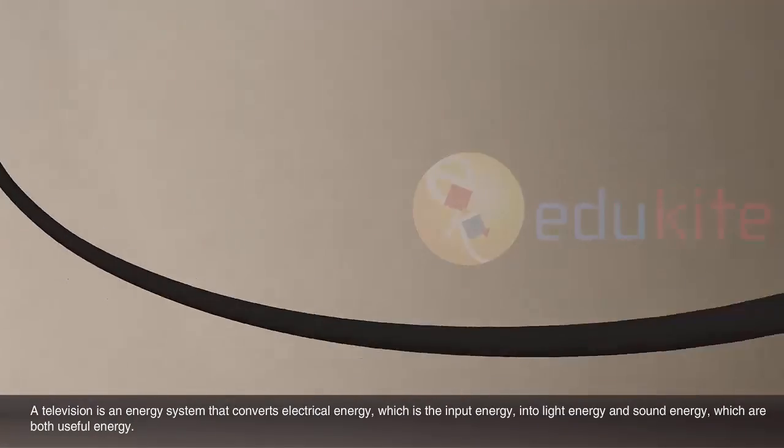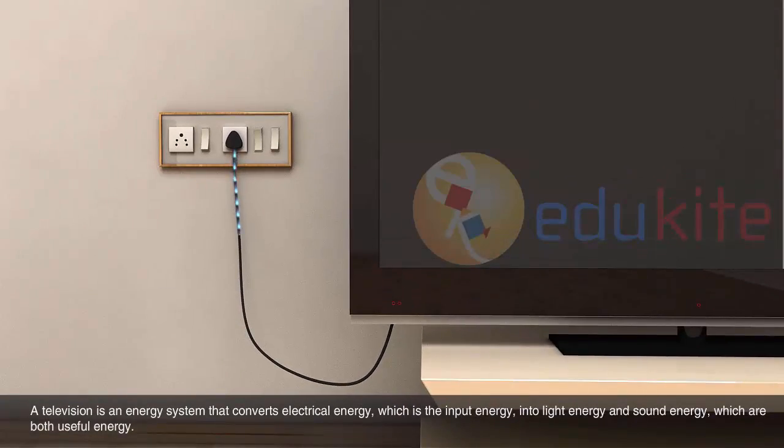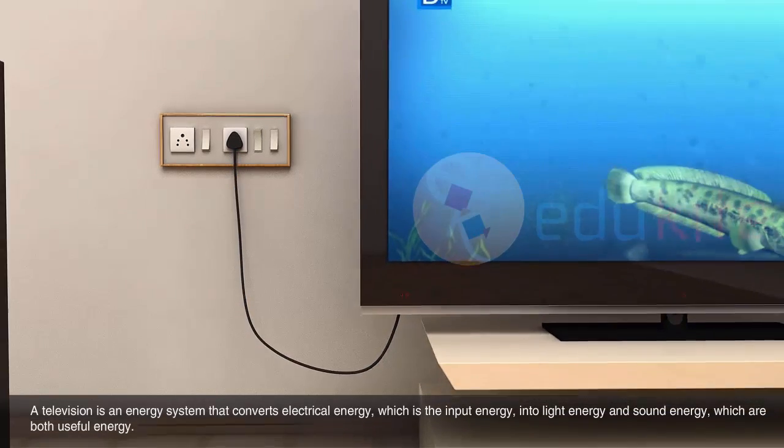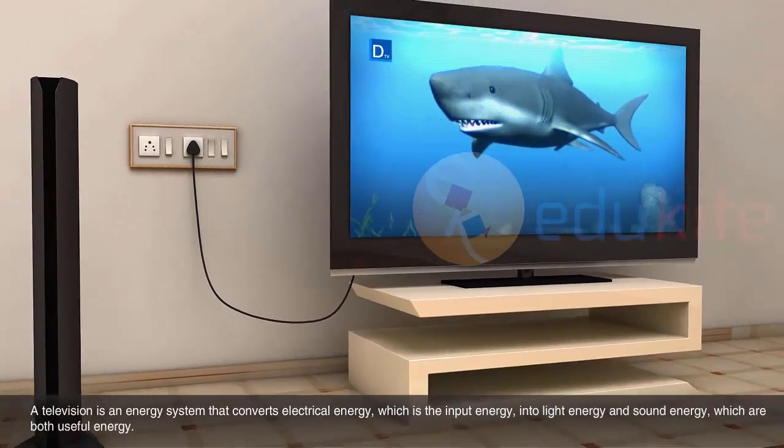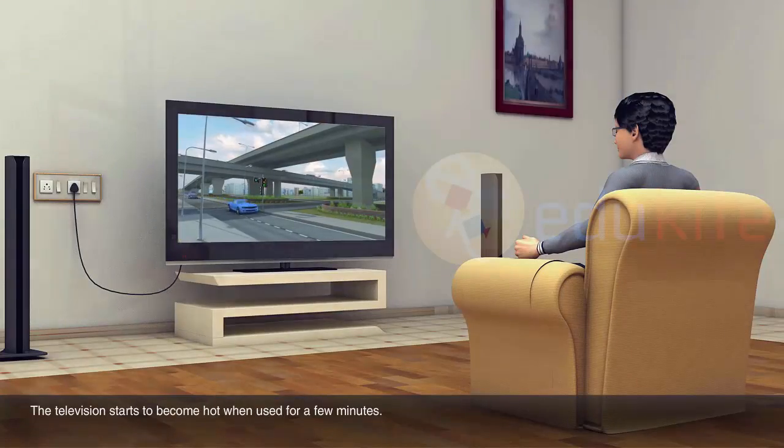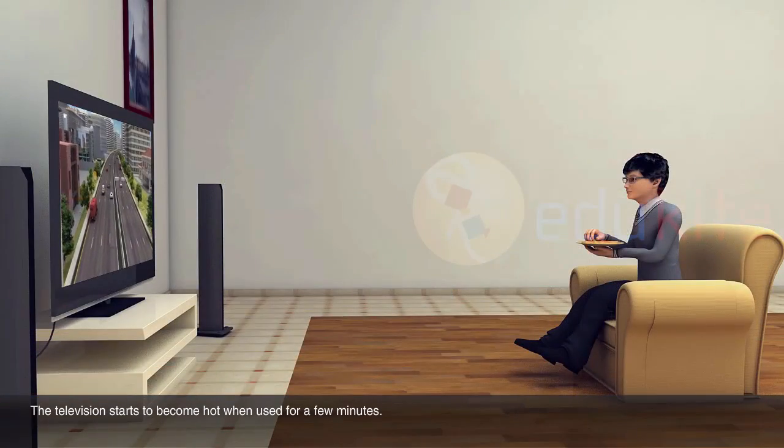A television is an energy system that converts electrical energy, which is the input energy, into light energy and sound energy, which are both useful energy. The television starts to become hot when used for a few minutes.